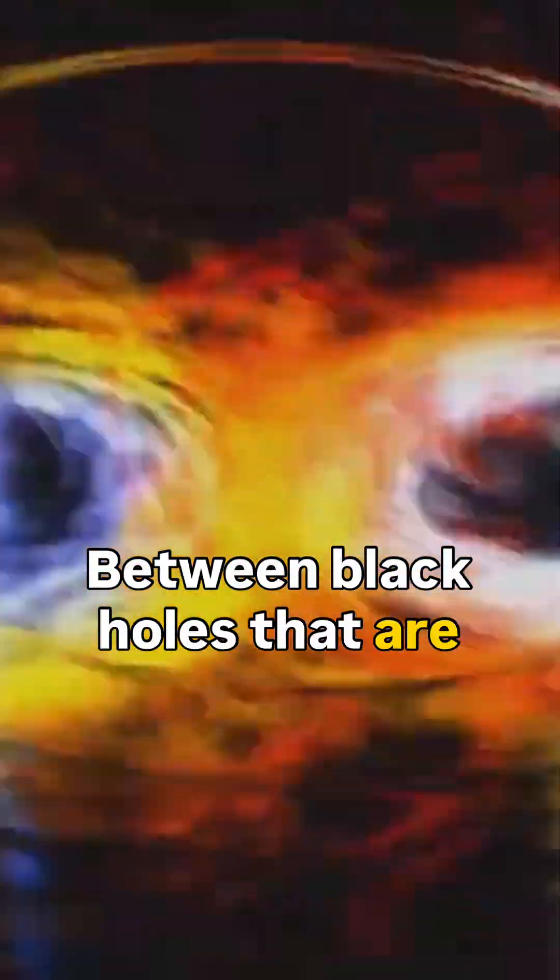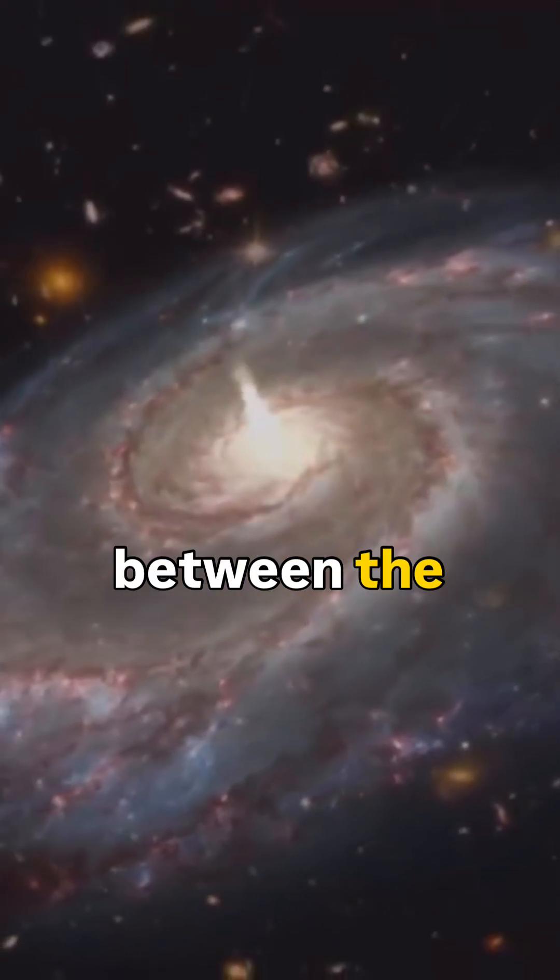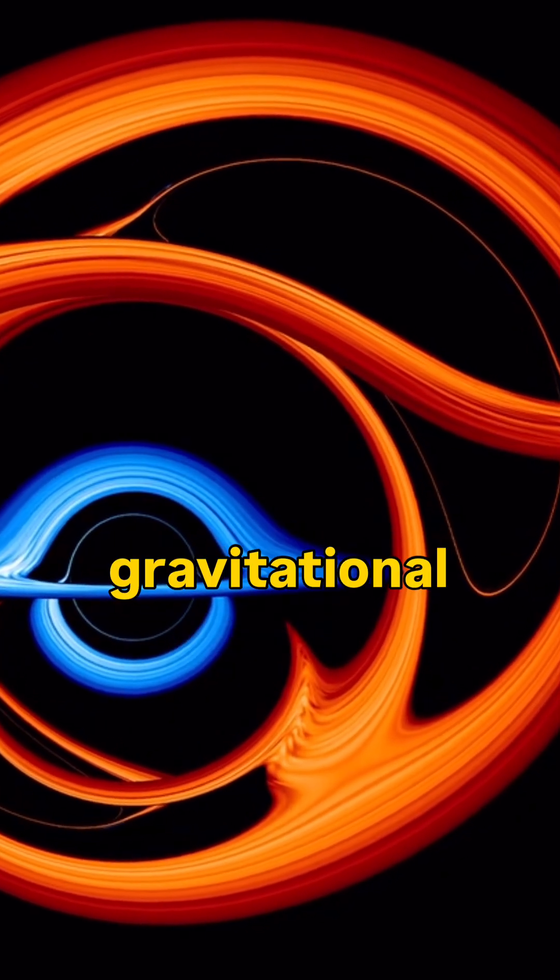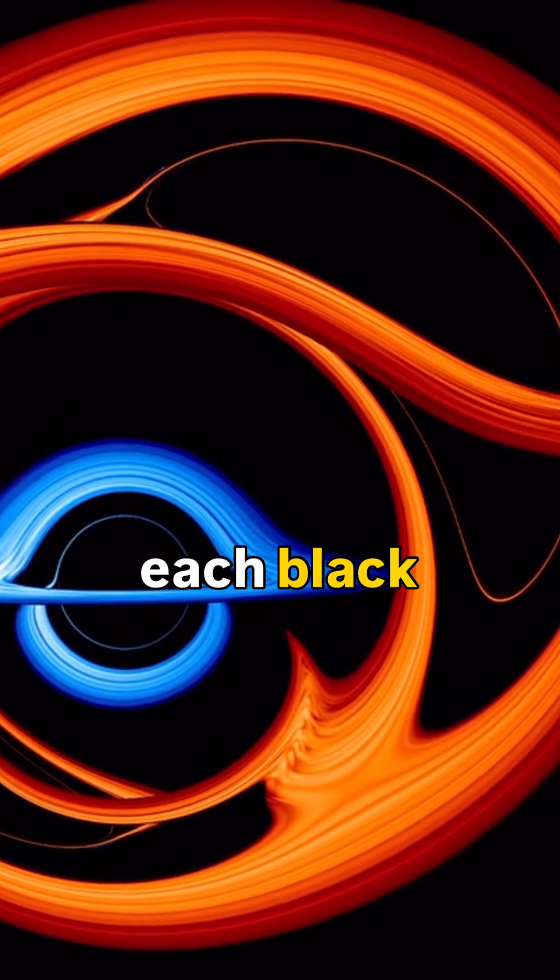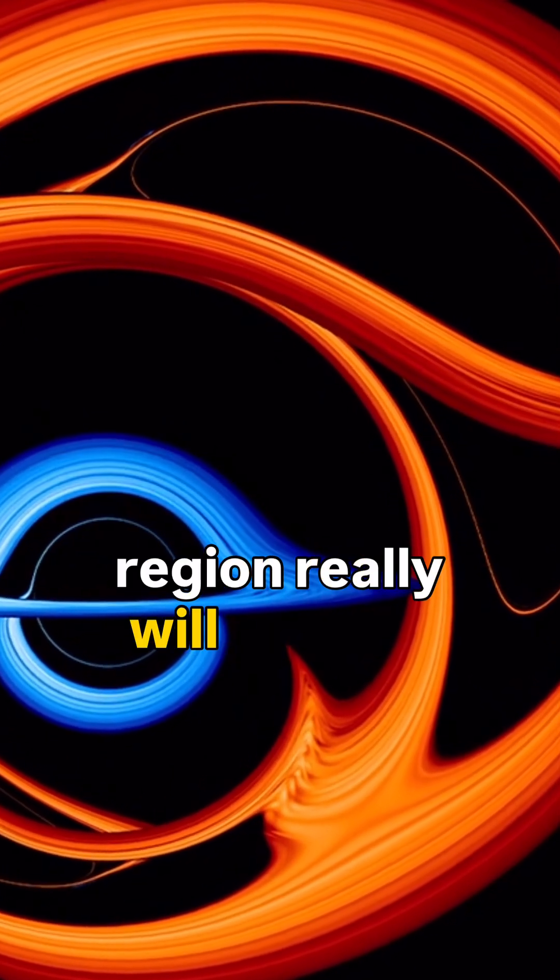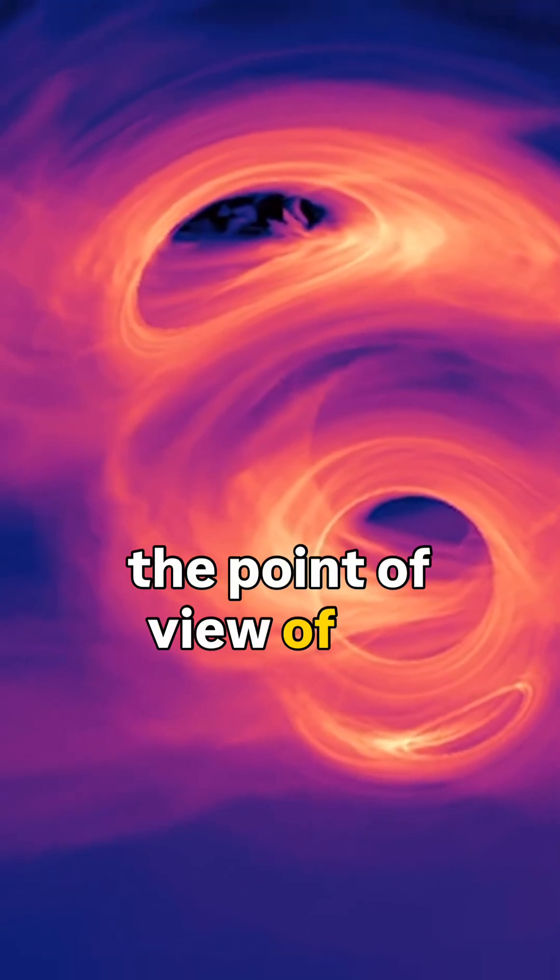Between black holes that are approaching one another, there really is a region where the gravitational pulls toward both holes are equal. Throughout the space between the black holes, the resultant of the forces applied to a body really will be less than the gravitational force toward each black hole separately. An object moving in this region really will deviate less from uniform straight-line motion from the point of view of an outside observer.